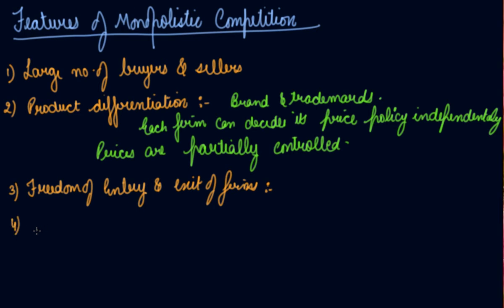The fourth feature is selling costs. Each firm has to increase selling costs to promote sales. So Colgate, Pepsodent, Close-Up, and Kranti are all competing with each other, and they have to incur promotional costs and advertisement costs. These are called selling costs. The fifth feature is less mobility — there is no perfect mobility of factors, goods, and services.